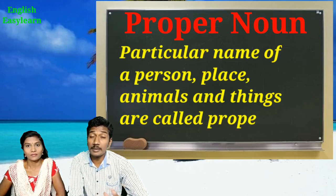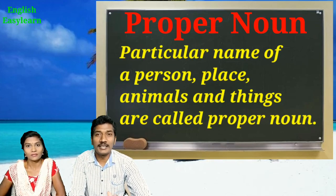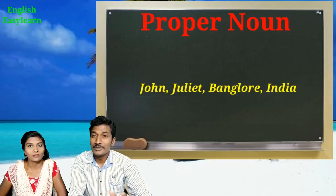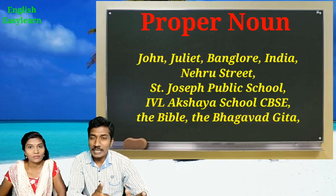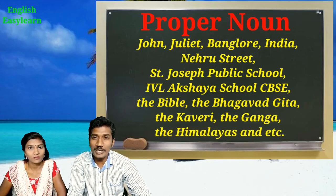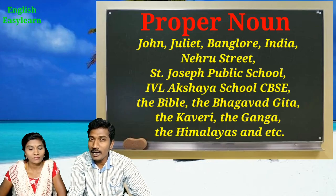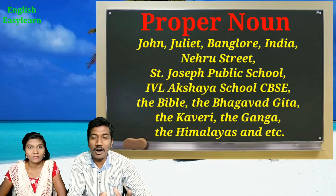Next, what is a proper noun? A particular name of a person, place, animal, or thing is called a proper noun. Examples: John, Juliet, Bangalore, India, Neeru Street, St. Joseph Public School, IVL Akshaya School CBSC, the Bible, the Bhagavad Gita, the Kaveri, the Ganga, the Himalayas. One important point — we also begin sentences in capitals, but words like 'what,' 'where,' 'which' at the beginning are not proper nouns. Proper nouns are particular names and they always begin with a capital letter wherever they appear.